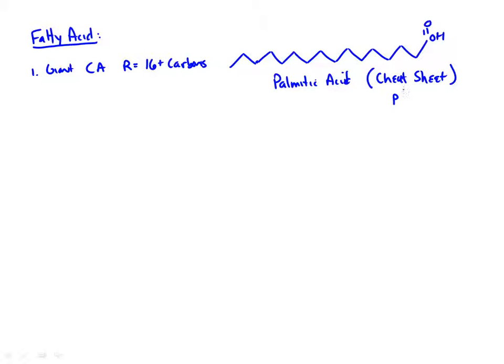There's also a table on page 764, Table 28.1, which you'll probably need to access for homework. With fatty acids, there are a number of different characteristics. In general, they are straight-chained versus branched, but what we find is that in nature we favor straight chains.